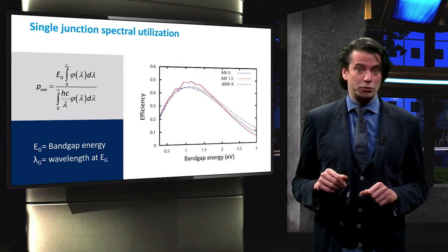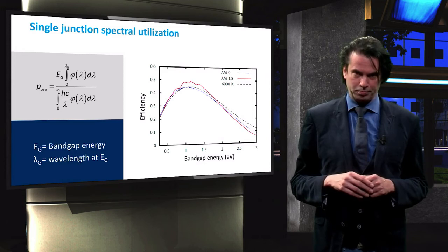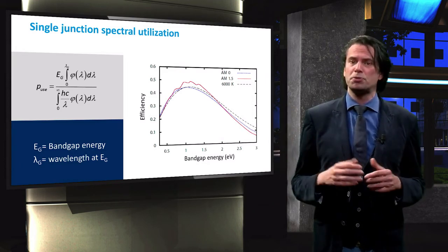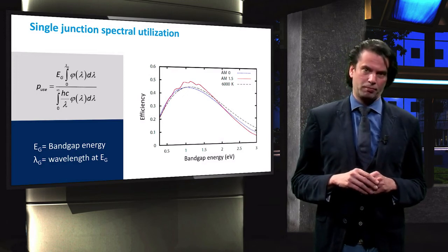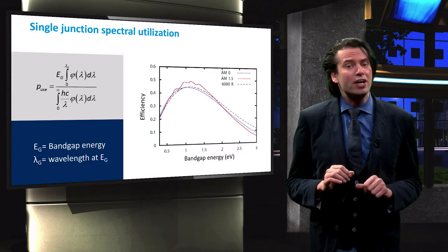the AM 0 spectrum in space, and the spectrum of a perfect blackbody radiator. The trade-off between thermal relaxation and non-absorption defines an optimal band gap energy. As we can see, this optimum is around 1.1 eV.